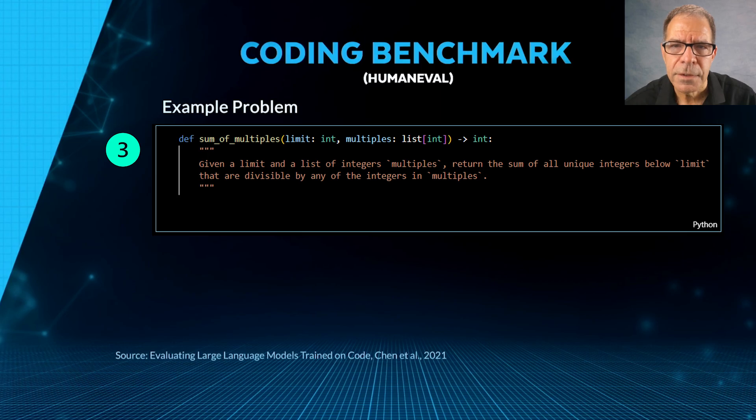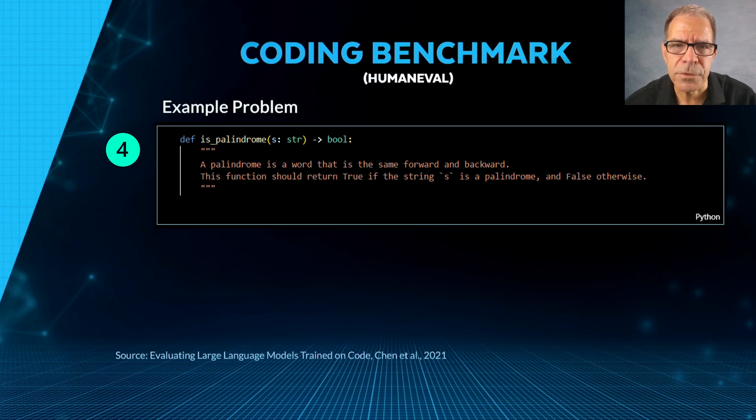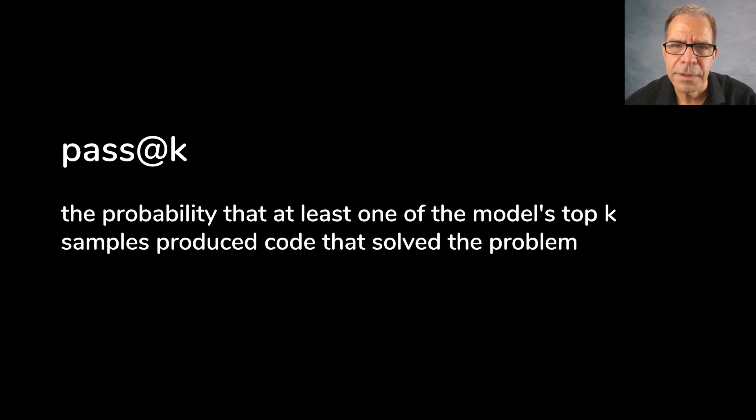For human eval, the primary scoring metric is pass at k, which measures the probability that at least one of the model's top k samples produced code that achieved the goal as intended.